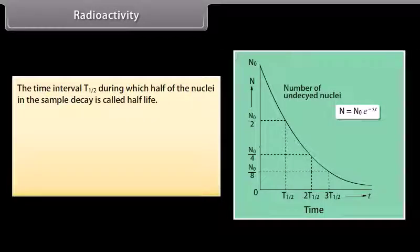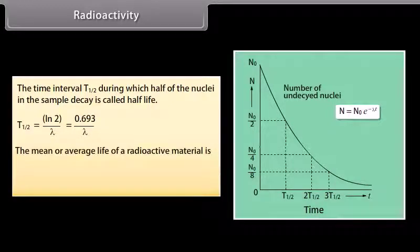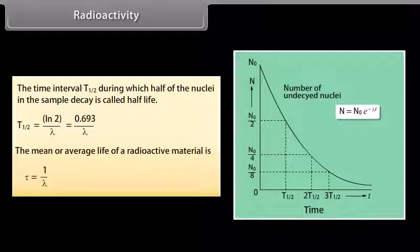Radioactivity. The time interval t half during which half of the nuclei in the sample decay is called half life. T half is equal to N2 by lambda, which is equal to 0.693 by lambda. The mean or average life of a radioactive material is tau, which is equal to 1 by lambda.